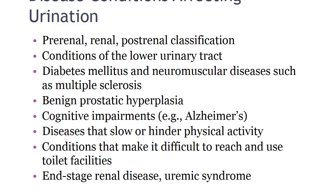Diseases causing irreversible damage to kidney tissue result in end-stage renal disease. The patient eventually develops uremic syndrome — an increase in nitrogenous waste in the blood — marked by fluid and electrolyte abnormalities, nausea, vomiting, headache, coma, and convulsions. As uremic symptoms worsen, aggressive treatment is required for survival, including renal replacement therapies such as dialysis or organ transplantation.